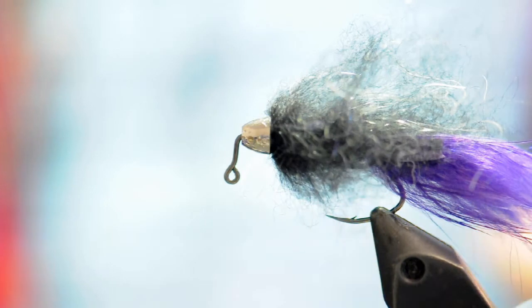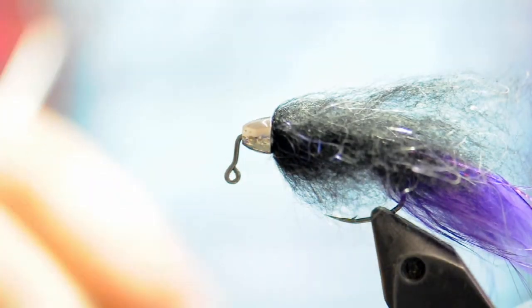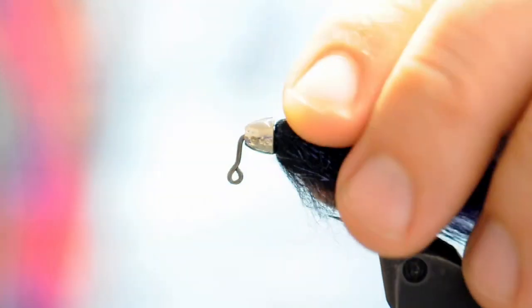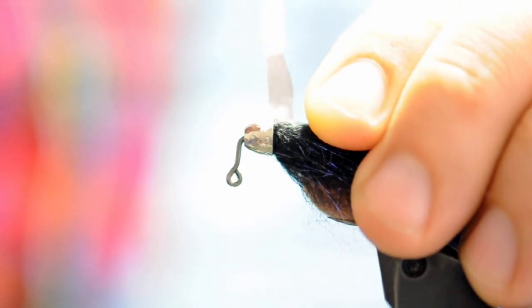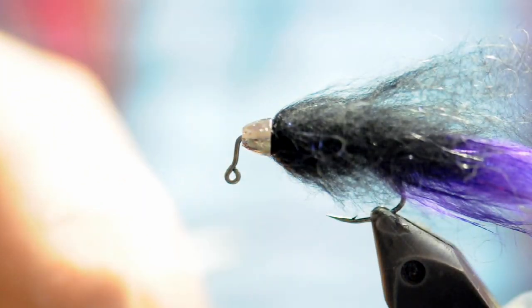And we'll cut our thread off and now we'll take some Sally Hansons and go ahead and try and get that into the gap behind the cone to just make sure that that thread has a little bit of adhesive on it and to protect our wraps. And I'll just wipe off by hand any kind of excess that happens to get on the cone.